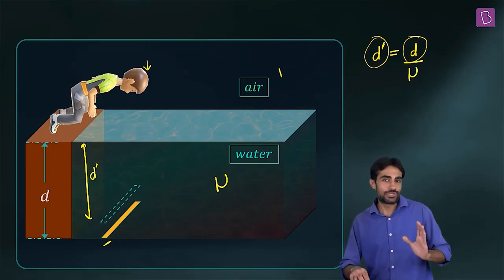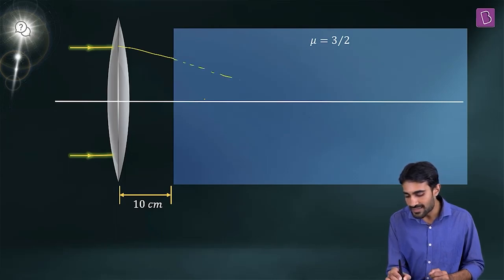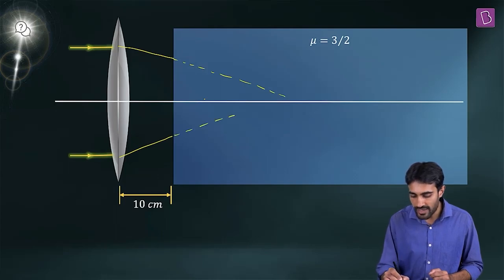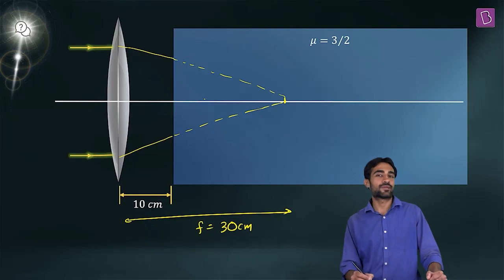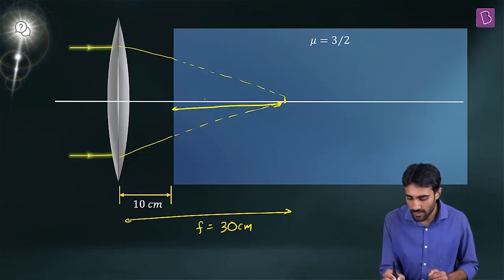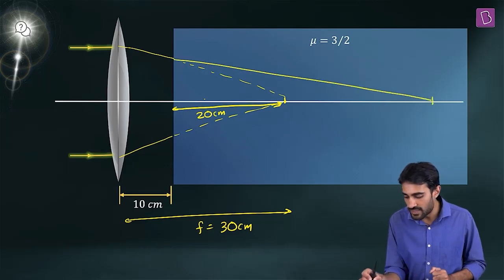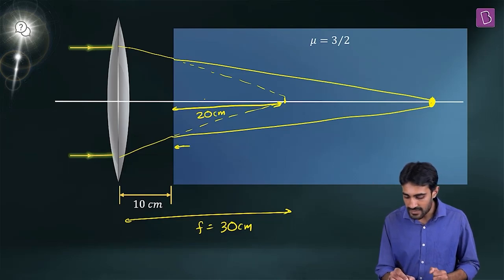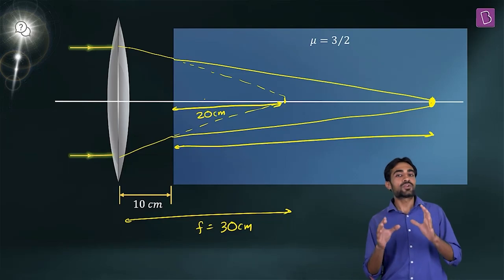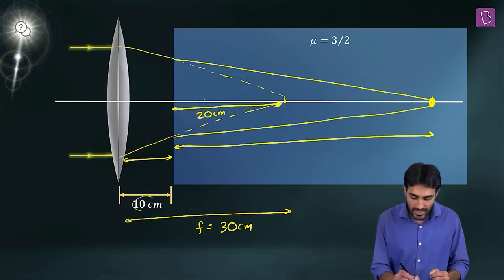Now let's relate this to our question. The parallel rays have a tendency to converge at the focus, and focal length is 30 cm. The refracting surface is 10 cm from the lens, so the distance from the surface to the would-be focus is 20 cm. Due to refraction, the rays converge at a new location at distance X from the surface.